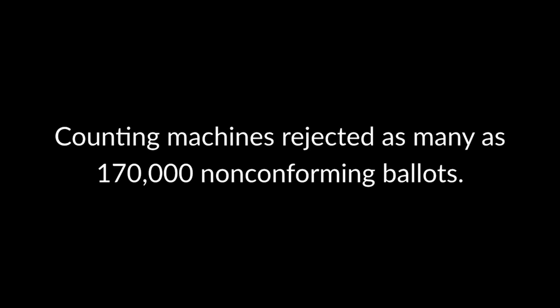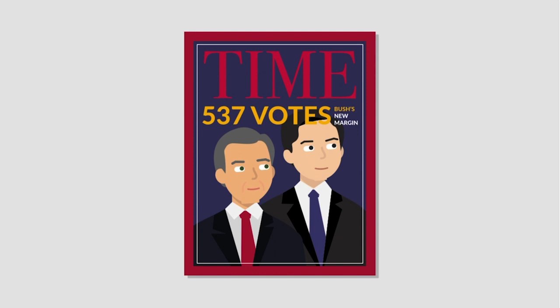Such problems caused the machines to reject as many as 170,000 non-conforming ballots. After the machine recount, Bush was still ahead of Gore, but by a noticeably lesser margin than in the initial calculation.